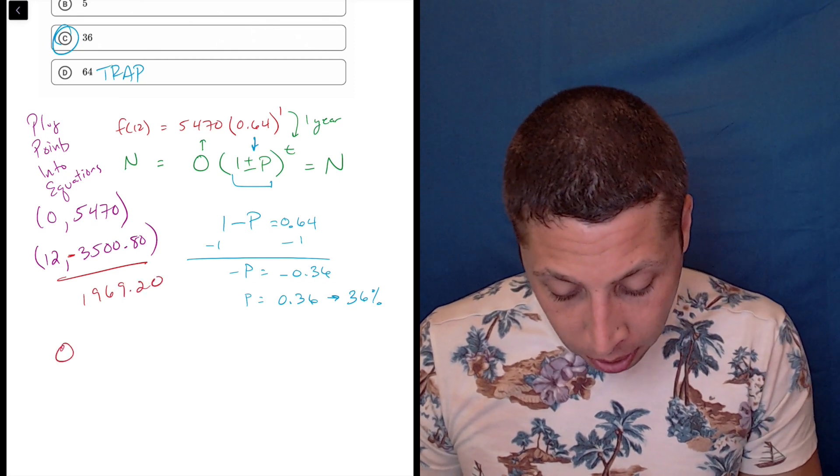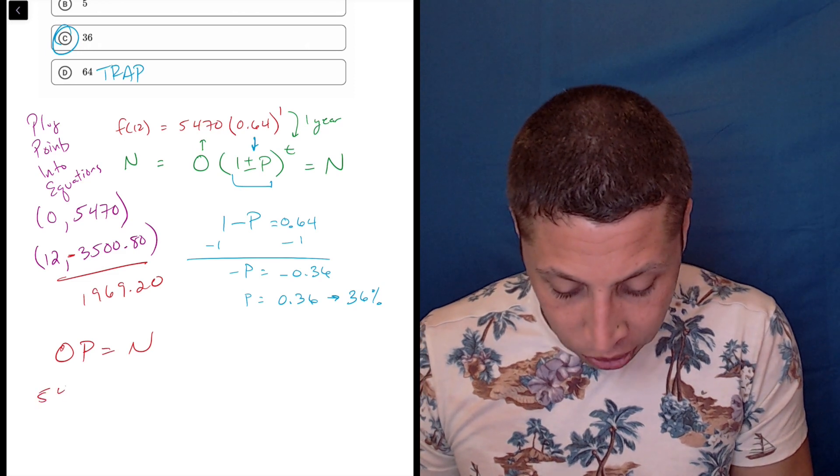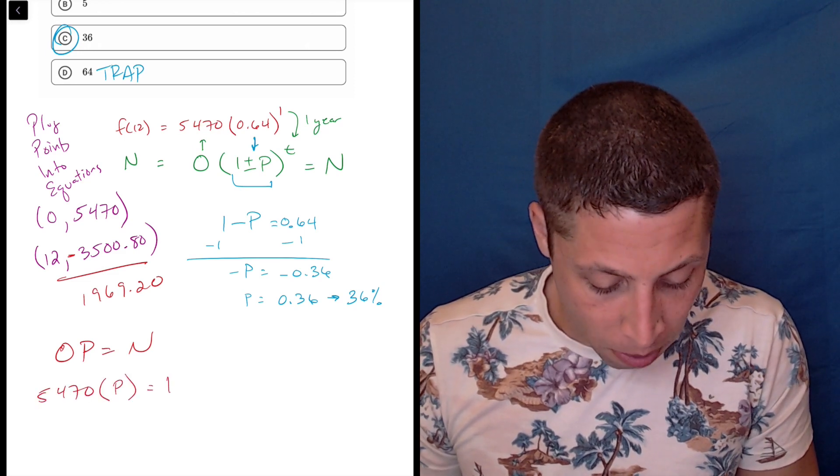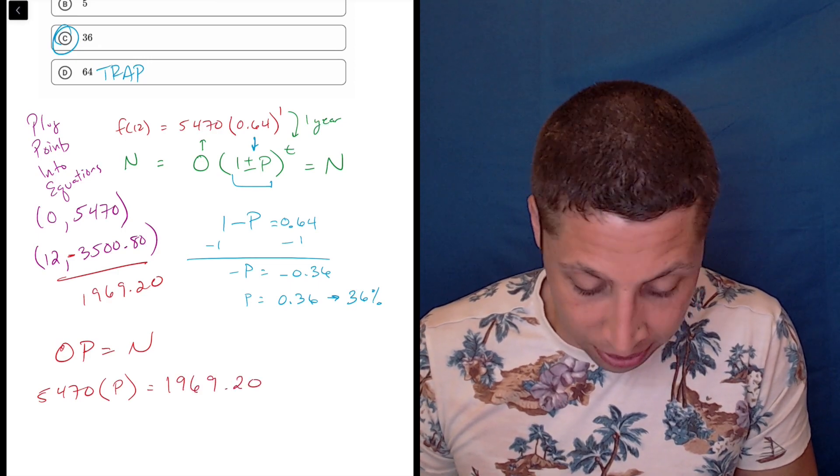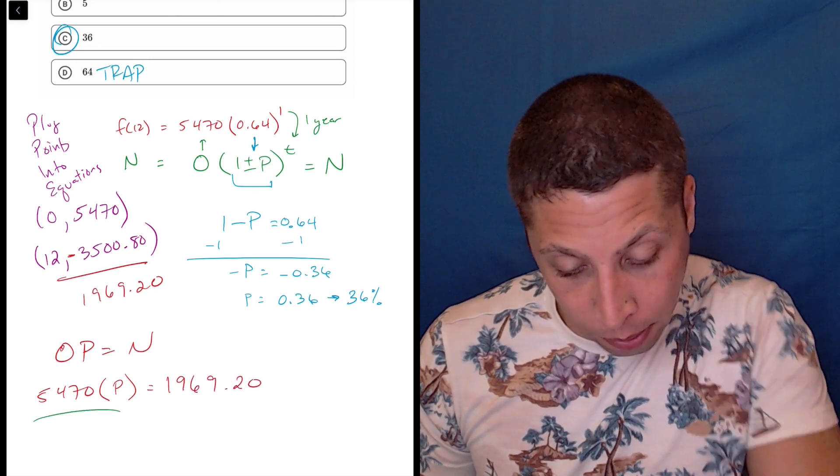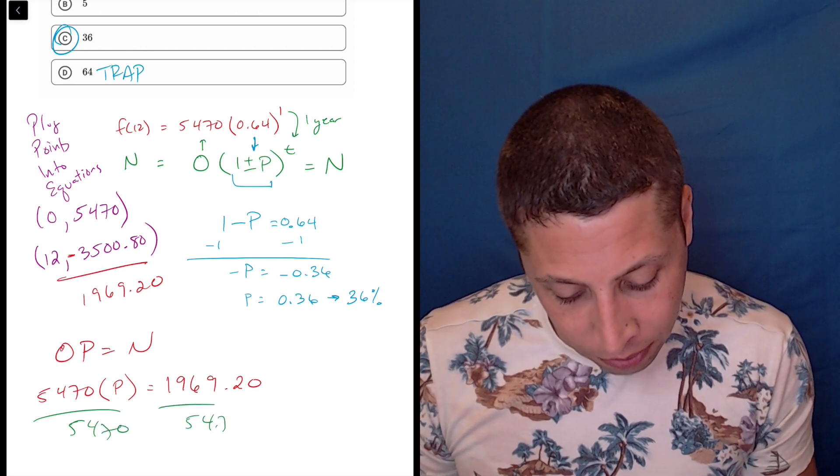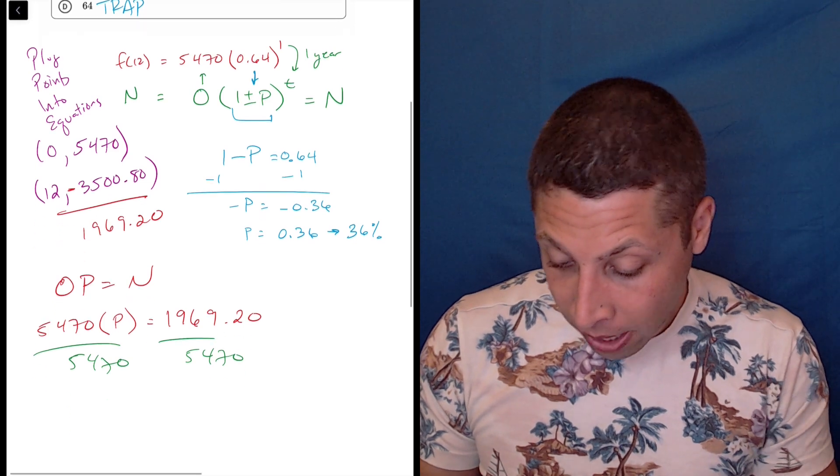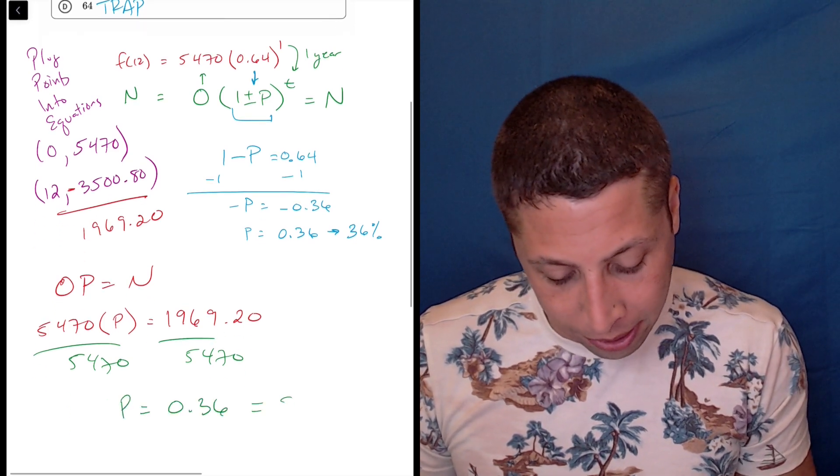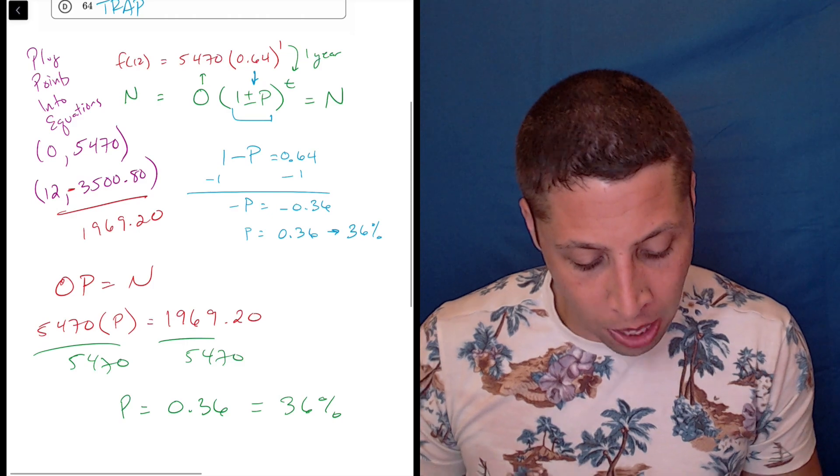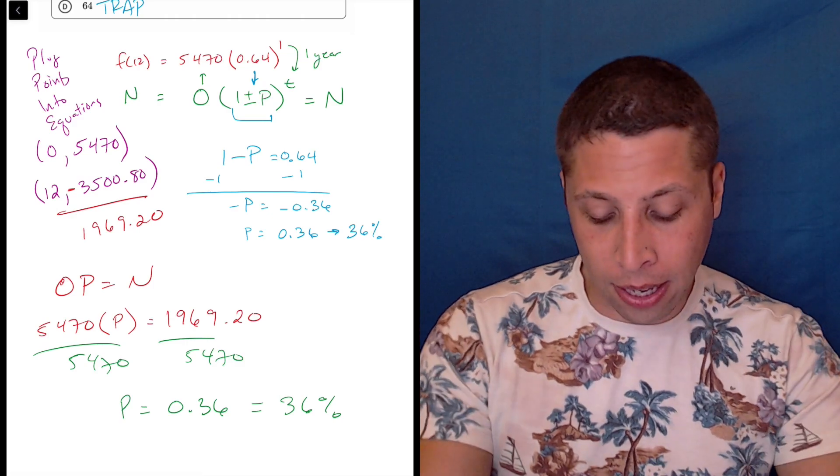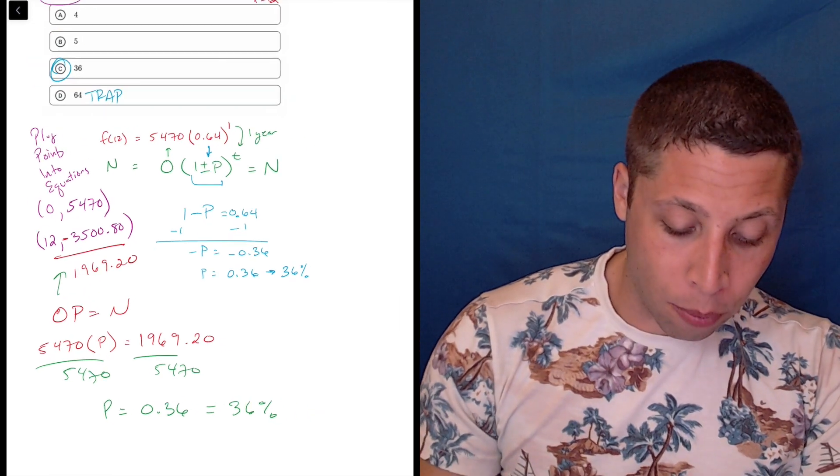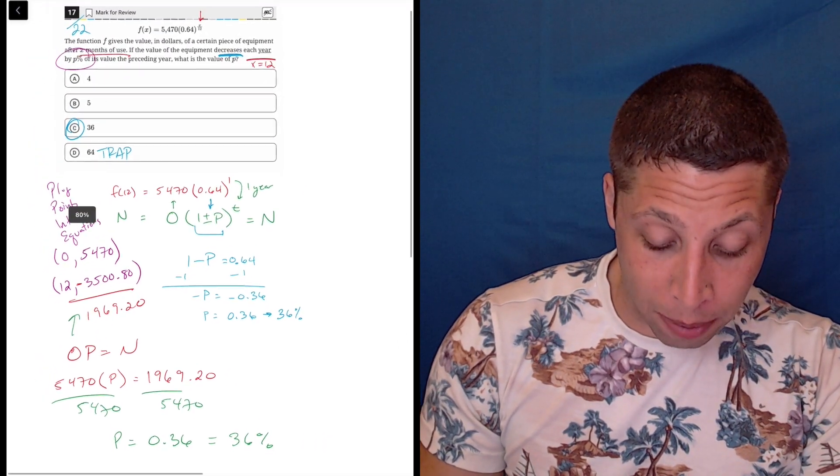So 5470 minus 3500.8 is 1969.20. And so of my original value of 5,470, I don't know the percentage, but what percentage is the 1969.20. So now I would just divide by 5470. Yeah, P is 0.36, 36%. The reason I don't like that is it requires this extra step of doing this subtraction.